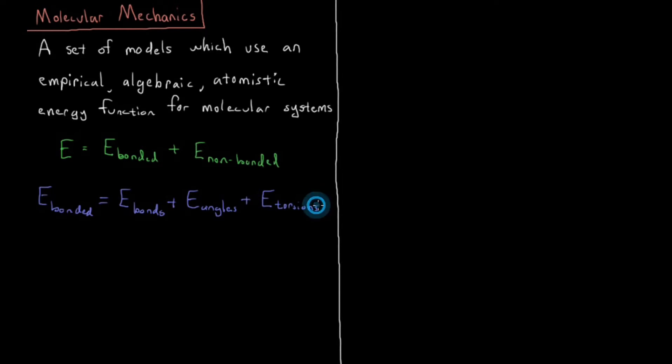And you have energy from torsions. As we discussed in the previous chapter, things like torsion angle in hydrogen peroxide, HOOH, torsion angles between HCCH and ethane, those sorts of torsion angles.